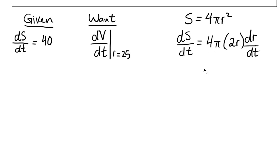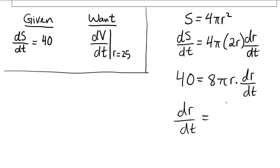Let's keep going with that. You know dS/dt is just 40 right, we're given that. So why don't we make that replacement. So we get 40 equals this is 8πr times dr/dt. And let me isolate for dr/dt. So dr/dt is going to be 40 over 8πr.